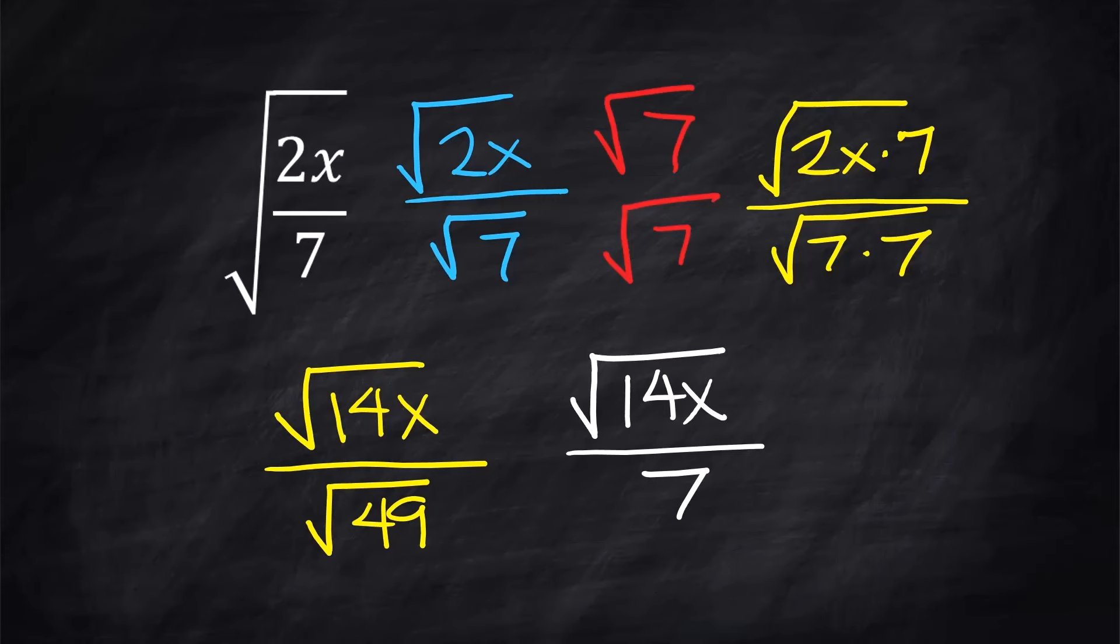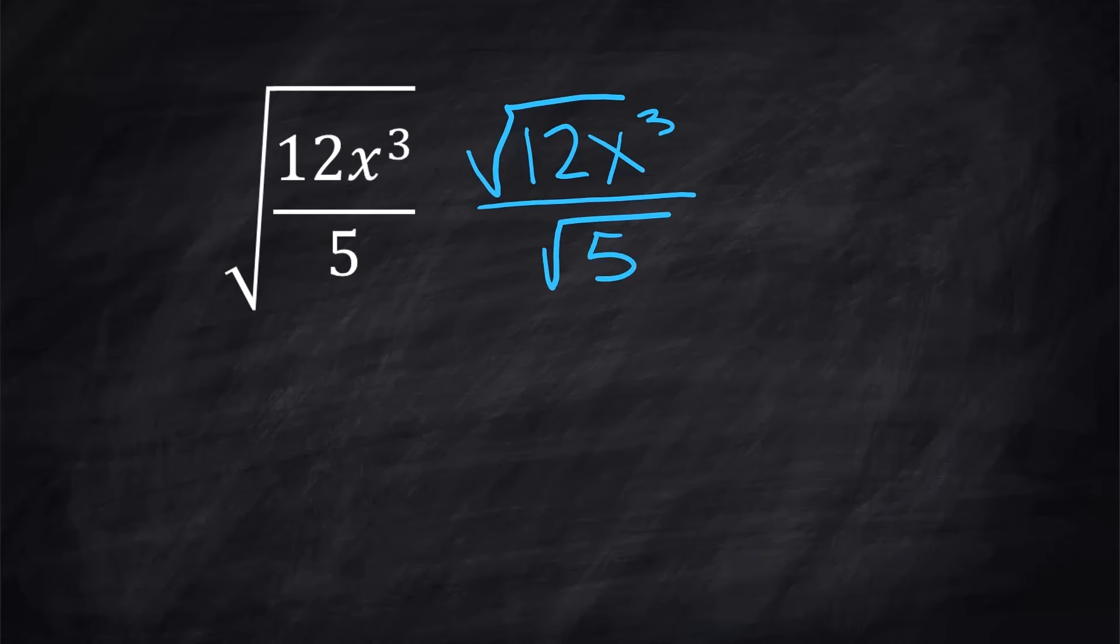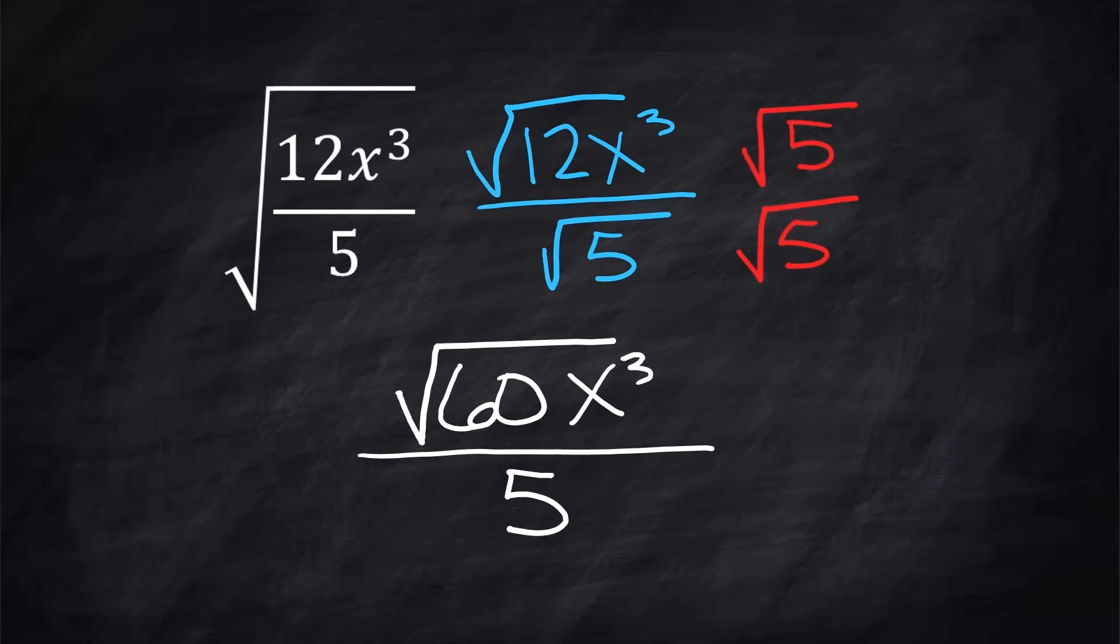If you take the square root of a number times itself, you're going to get that number back. Starting out the same way, doing the rationalizing, and we end up with this, and that looks really good.